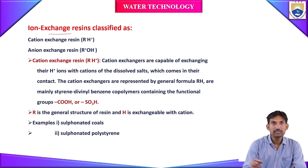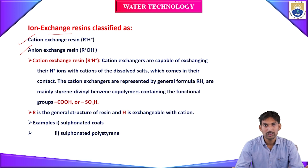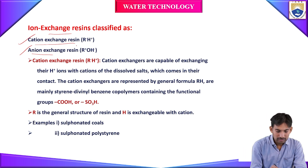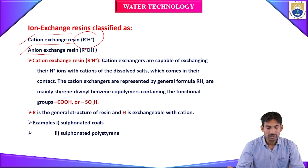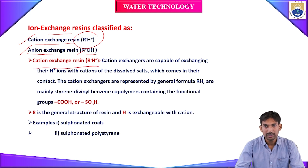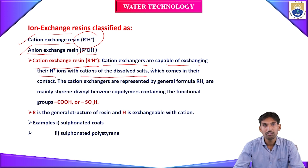The ion exchange resins are classified into two types: cation exchange resins and anion exchange resins. The cation exchange resin is denoted by R⁻H⁺, and the anion exchange resin is denoted by R⁺OH⁻. Cation exchangers are capable of exchanging their H⁺ ions with cations of dissolved salts in the water.